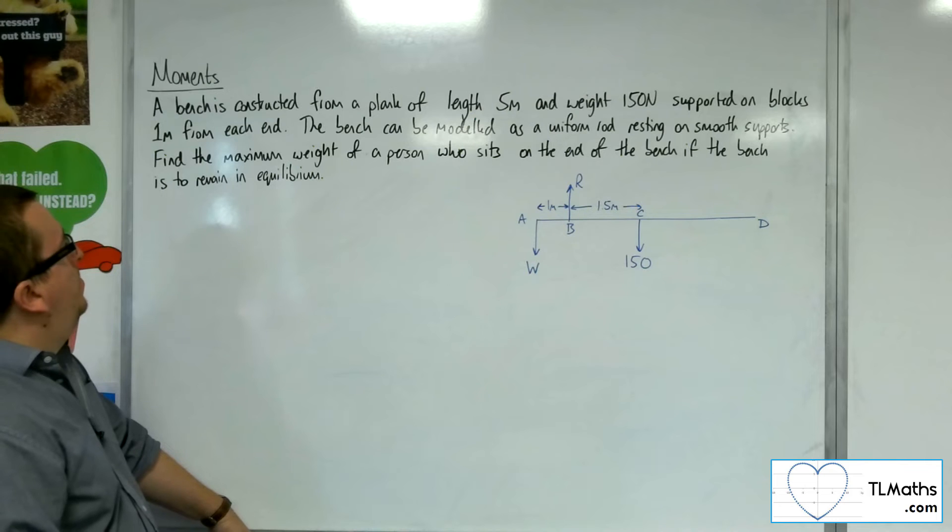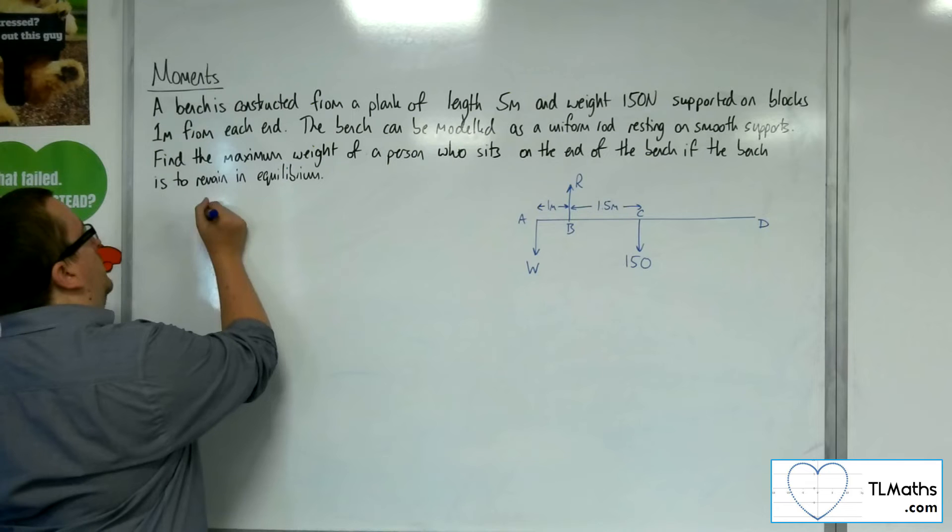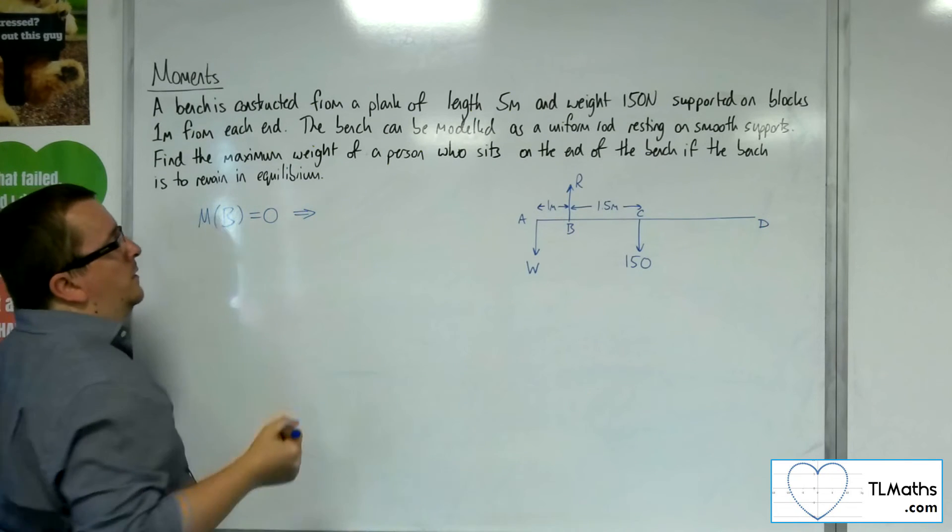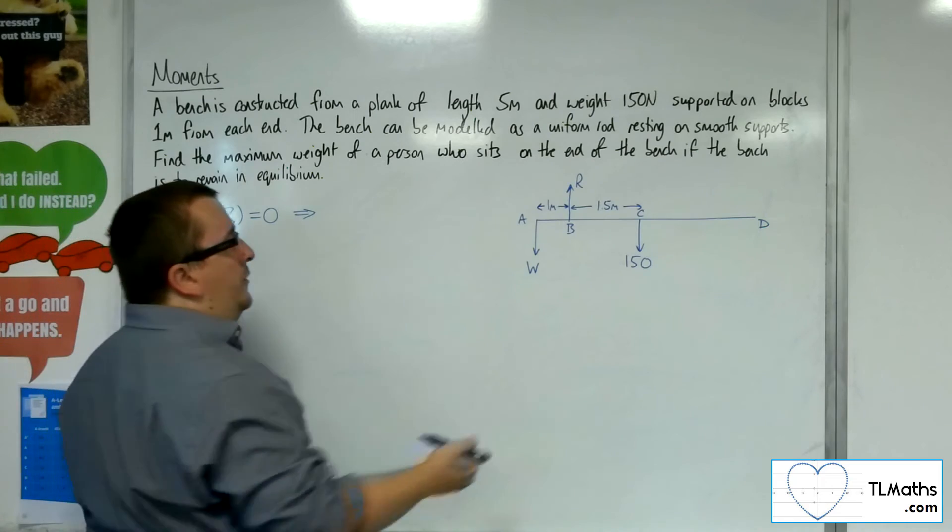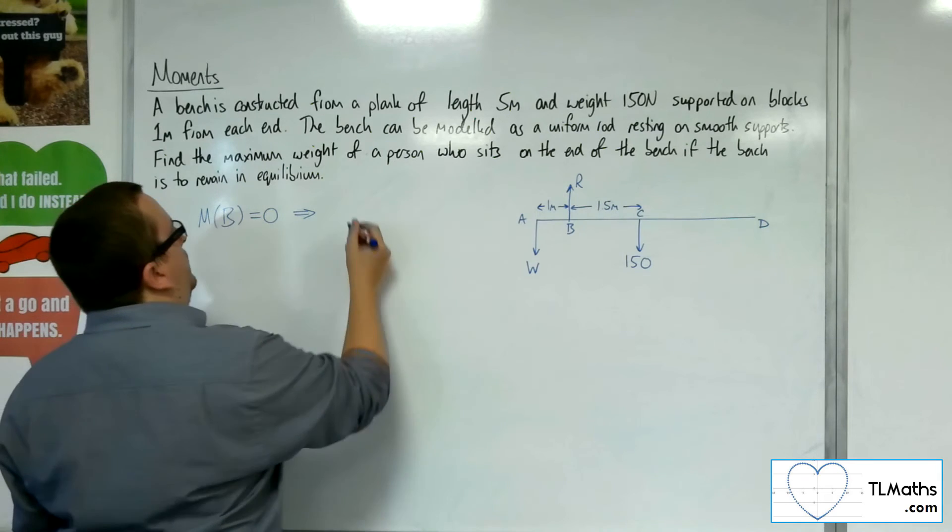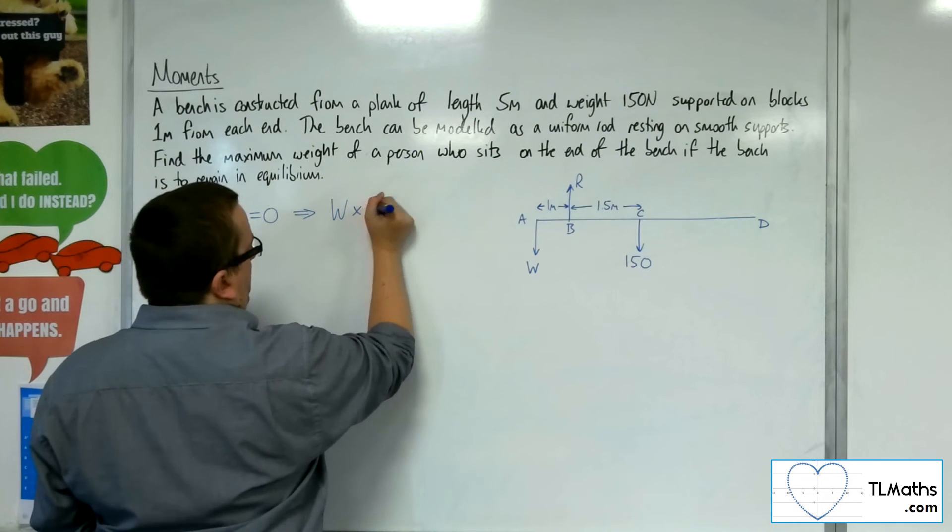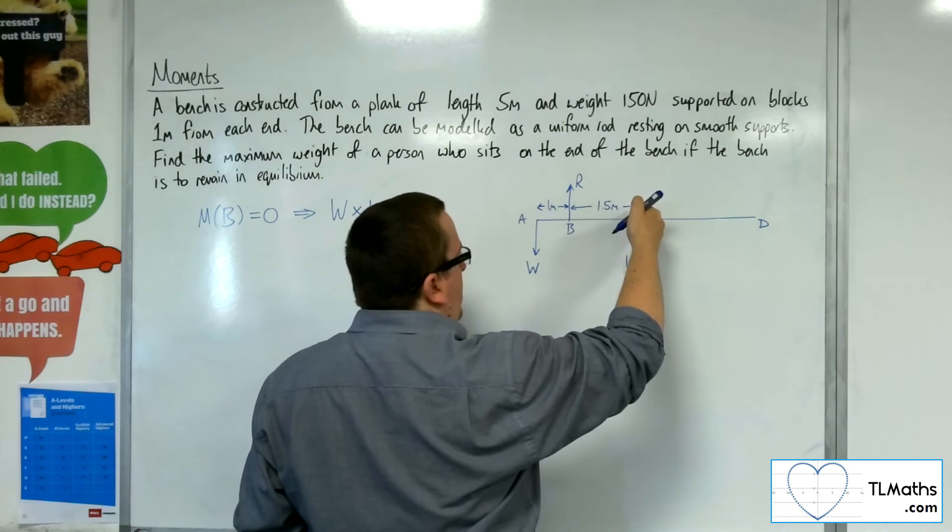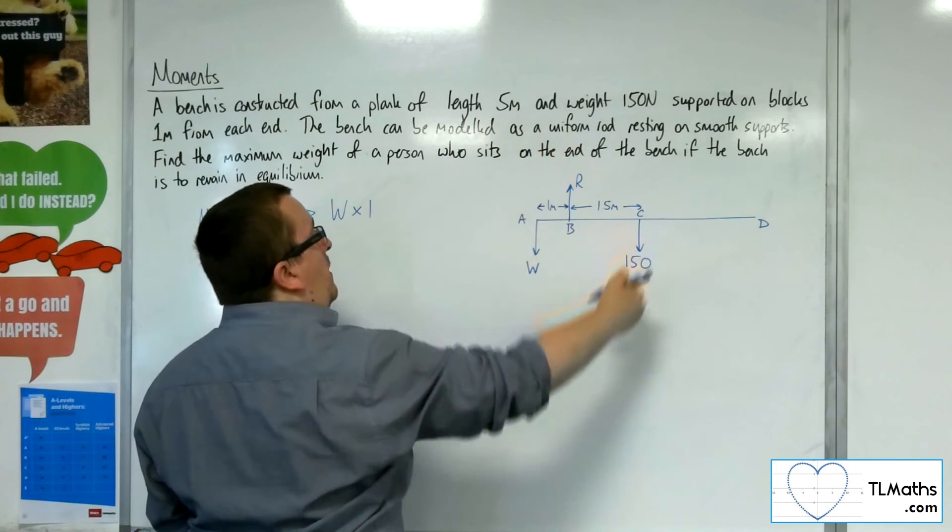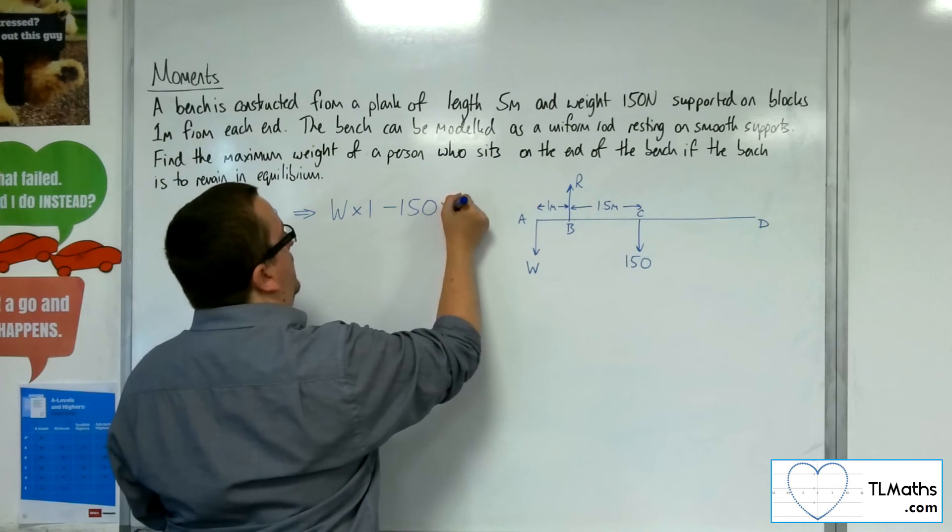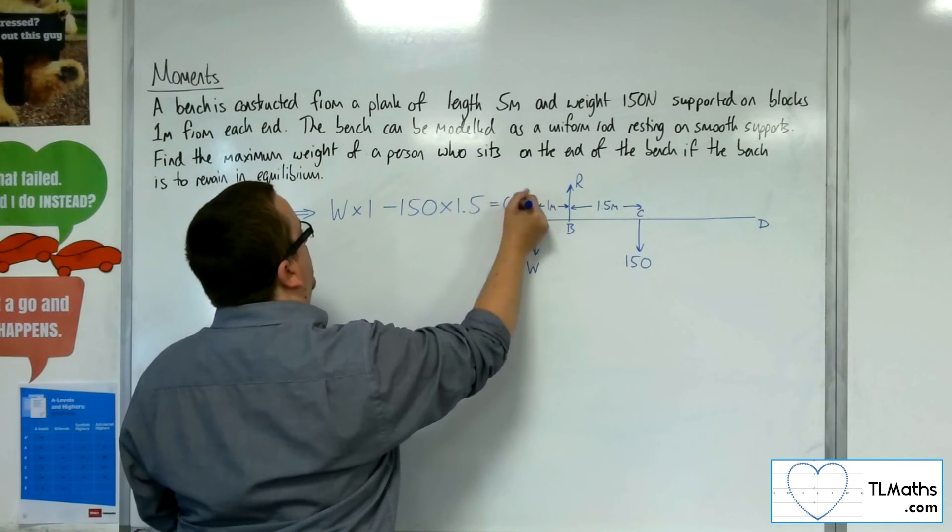If I take moments about point B, then I've got the weight, which is going around that way. It's anti-clockwise. So, that's positive. That's 1 meter away. And I've got the weight of the bench. That's going around that way. So, clockwise, negative. Take away 150 times by 1.5. That's got to be equal to zero.